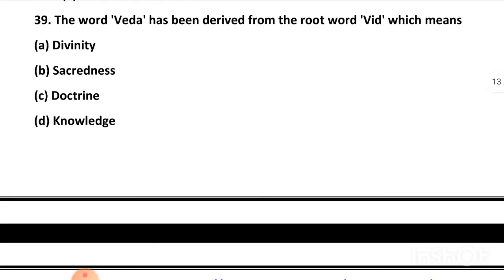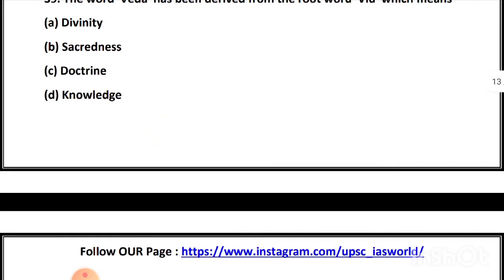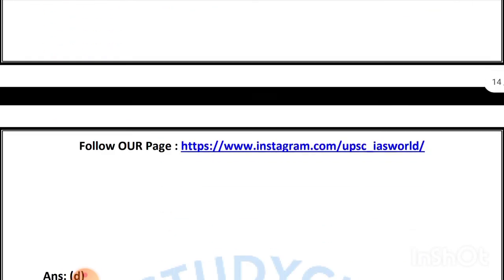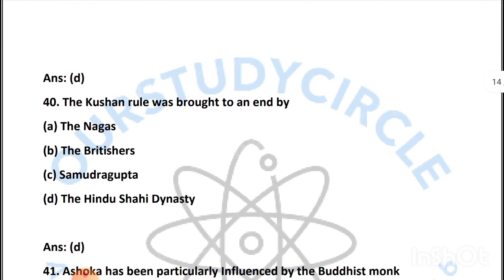Our next question is: the word Veda has been derived from the root word which means knowledge. The next question is: whose rule was brought to an end by — and the right answer is the Hindu Shahi dynasty. That's all about the Harappan civilization and Indian history questions.